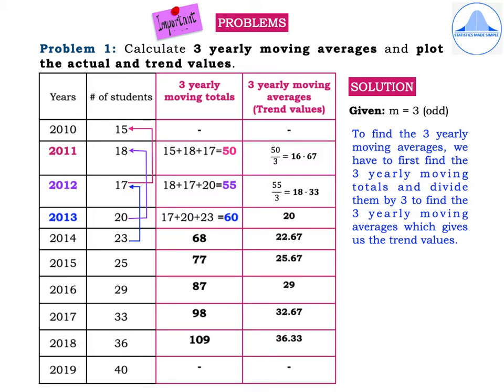Under the solution, first write: given m equal to 3, which is an odd number, because we are asked to find the three-yearly moving averages. The first step is to find out the three-yearly moving totals and then calculate the three-yearly moving averages, which are the trend values. In the table, I have formed two additional columns highlighted in pink: three-yearly moving totals and three-yearly moving averages, which are the trend values. Please write the column headings correctly.